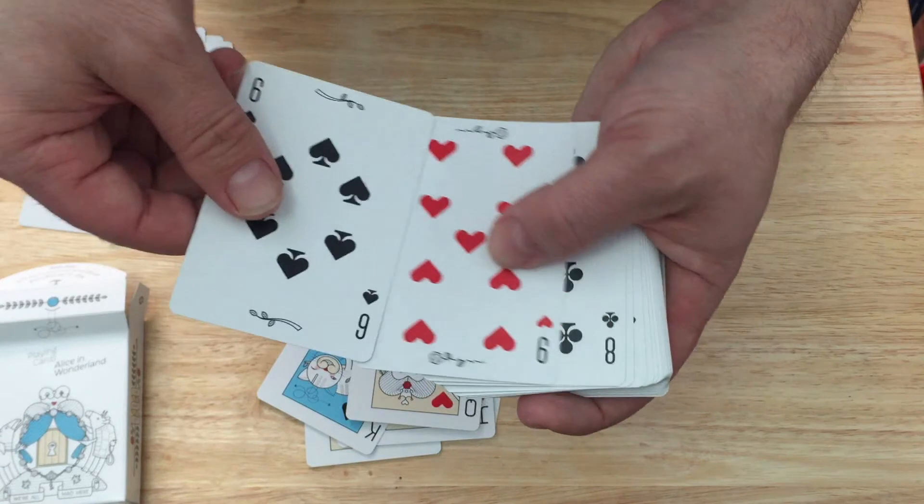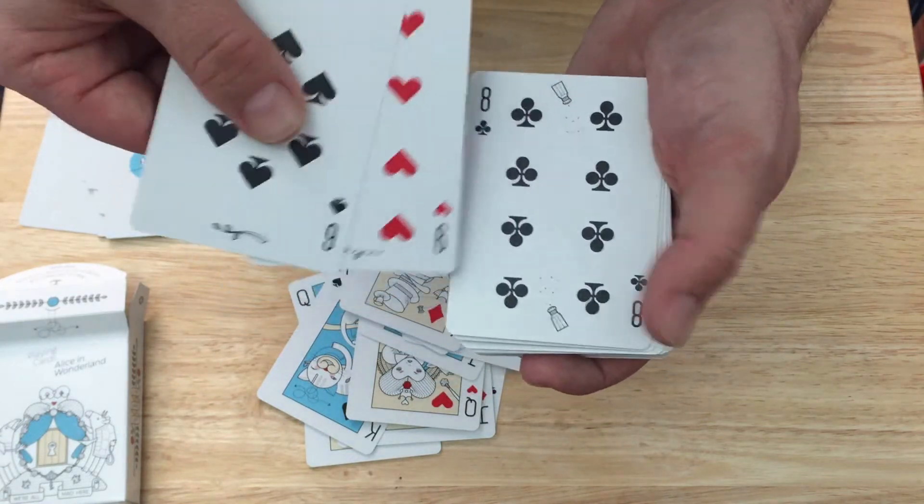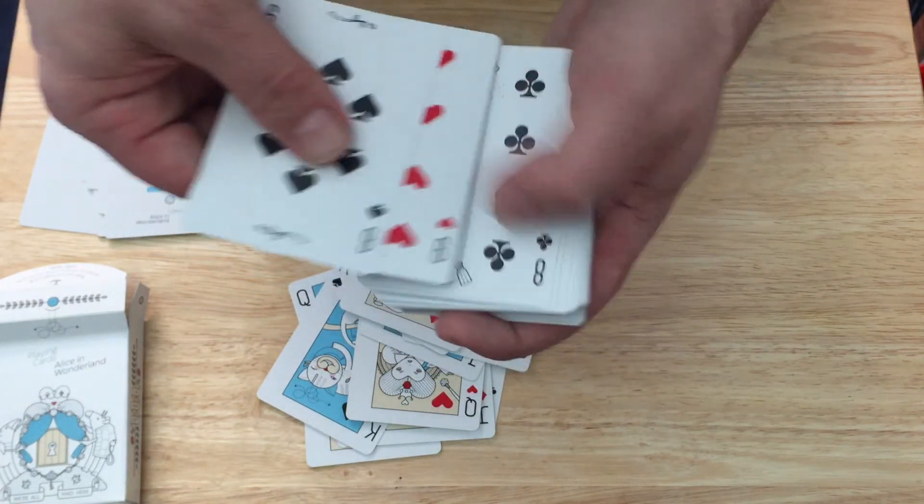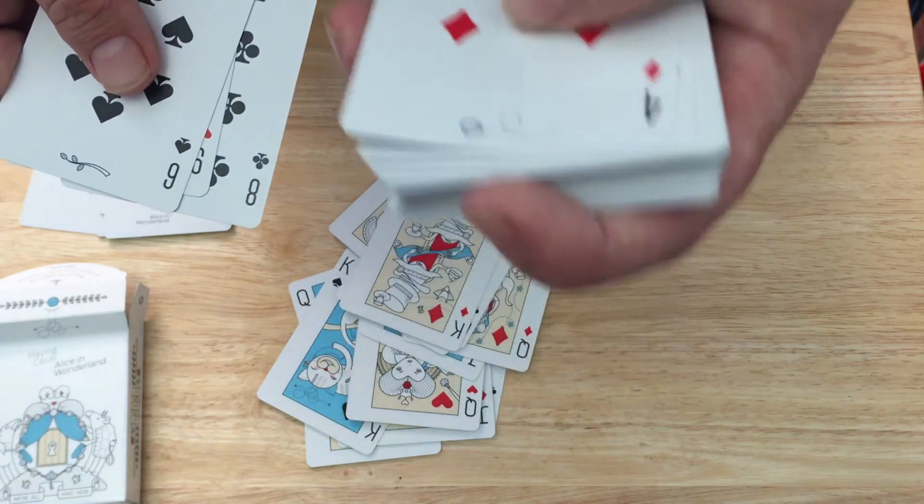The number cards, nice modified pips. Each suit has its own little thing, it's got the pepper, it's got the flowers, it's got the vine, and this has the watch.